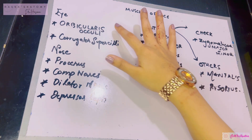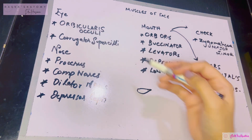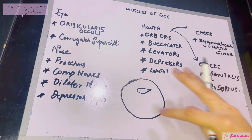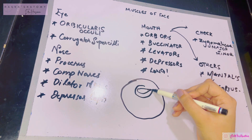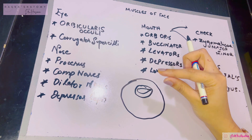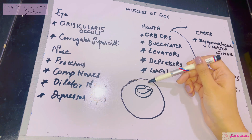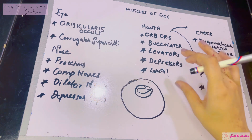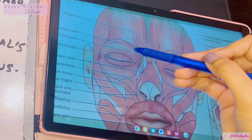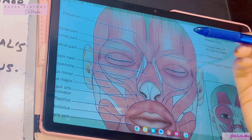The first muscle is the orbicularis oculi — wherever you see the word 'orbicularis,' it means it's a rounded muscle. It has two parts: a large orbital part covering the entire orbit, and a palpebral part, a smaller part covering your eyelids. The palpebral part is responsible for gently closing the eyes — as in sleeping or normal blinking. The orbital part is responsible for more aggressive closure of the eyes, for instance when you see something scary and need to forcefully shut them. There is also a third lacrimal part.